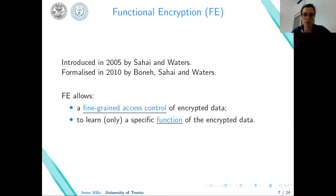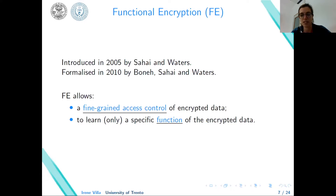Functional encryption was introduced in 2005 by Sahai and Waters, and later formalized in 2010 by Boneh and Waters. Functional encryption was born with mainly two goals: first, to allow fine-grained access control of encrypted data; and second, to allow learning only a specific function of encrypted data — as opposed to the all-or-nothing nature of public key encryption.